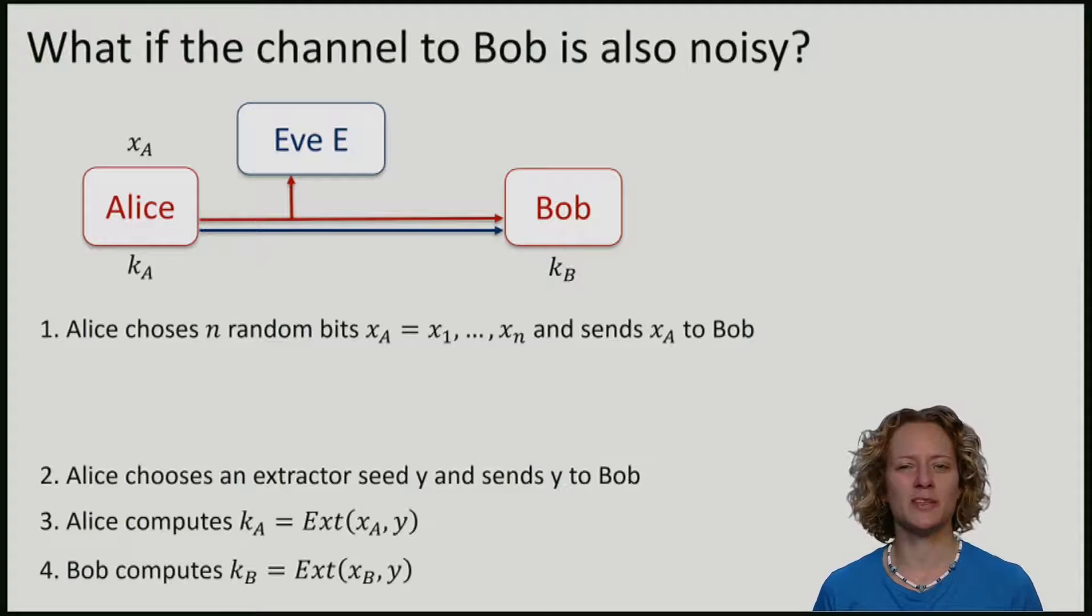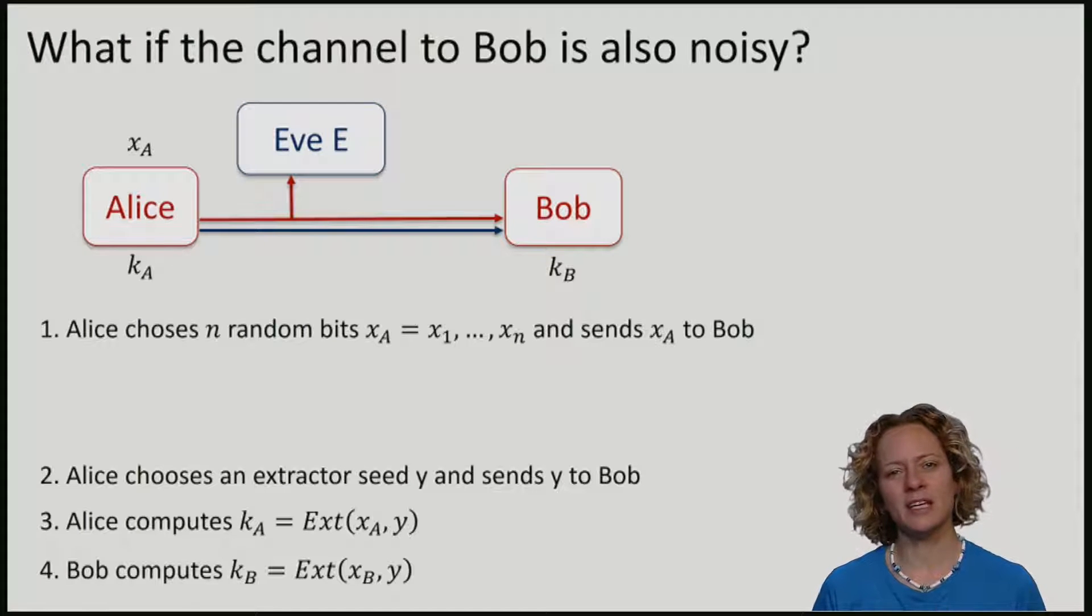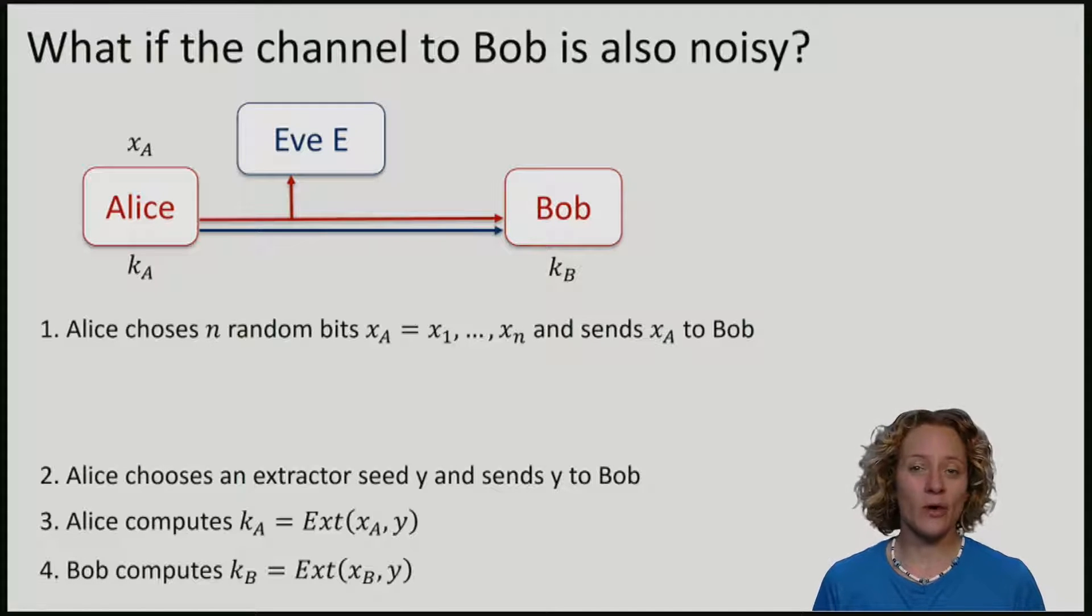We have seen how to distribute keys if Eve has a noisy version of the bits that Alice sends to Bob. Of course you might be asking, what if Bob also only has a noisy version of these bits?